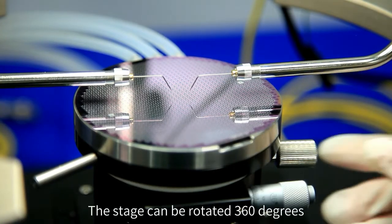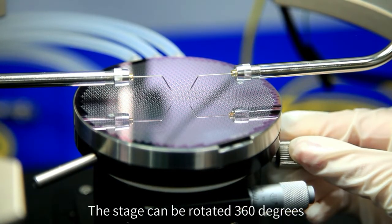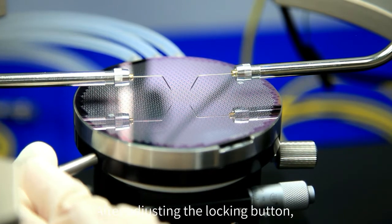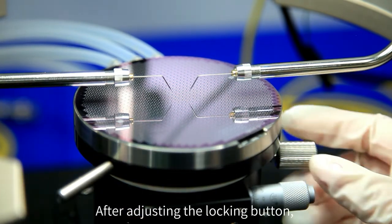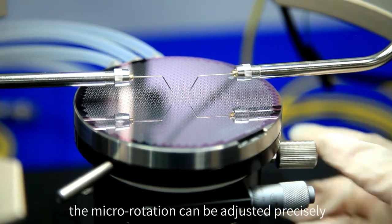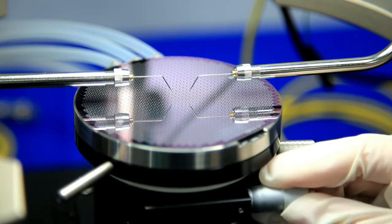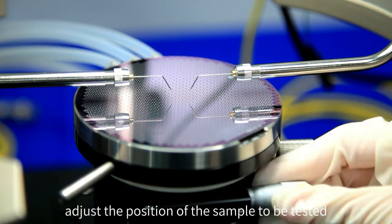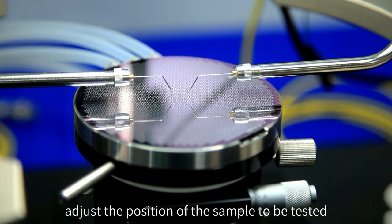The stage can be rotated 360 degrees. After adjusting the locking button, the micro rotation can be adjusted precisely, which is convenient to adjust the position of the sample to be tested.